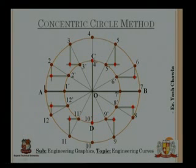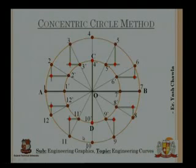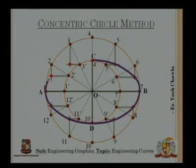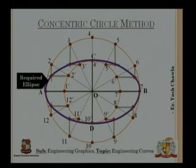Join all the intersection points in clockwise order starting from C to get the required ellipse by the concentric circle method. Two more methods will be discussed next.